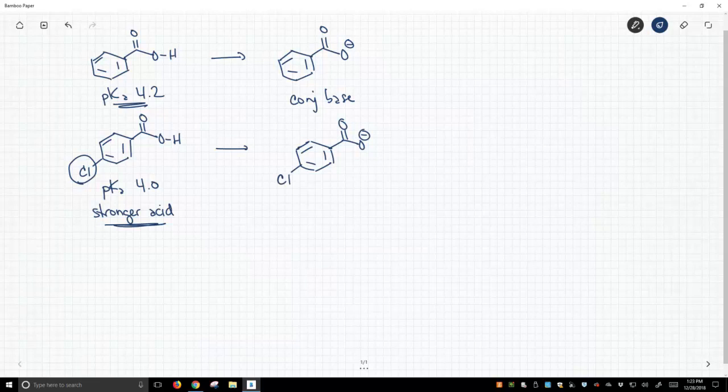Now, there are two factors that we're going to use to try to explain this. The first is going to be resonance. Resonance almost always pops up in some form when we talk about charge stabilization. Okay, so here's chlorine and there's our carboxylate over here.